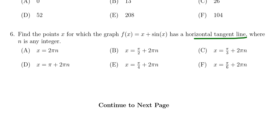If you have a horizontal tangent line, that means your derivative is equal to zero. So we need to compute the derivative of f and figure out where it's equal to zero.